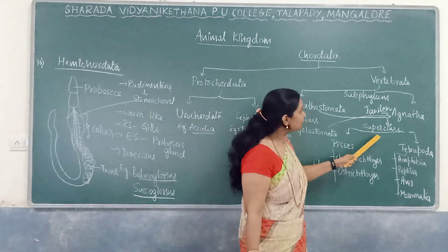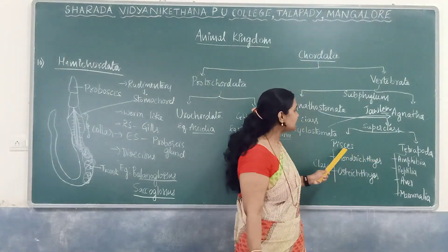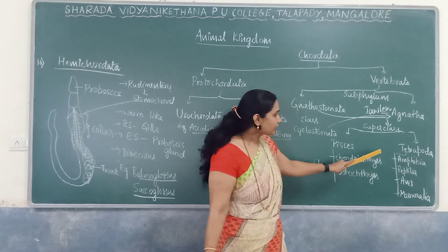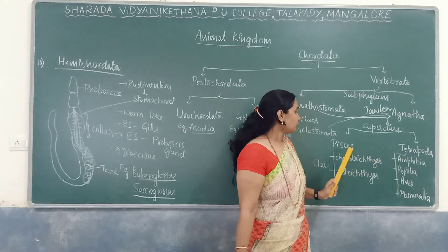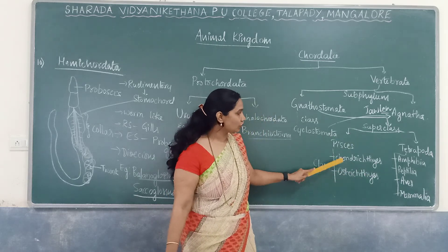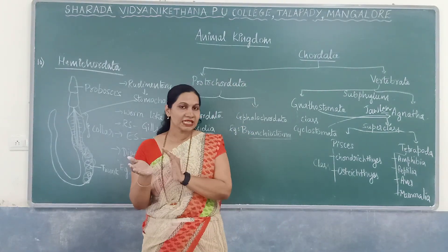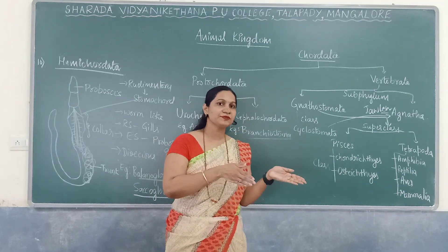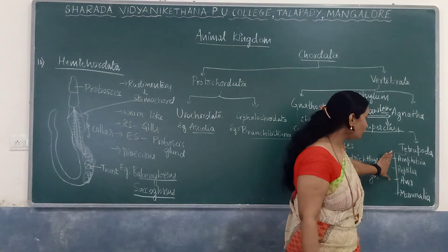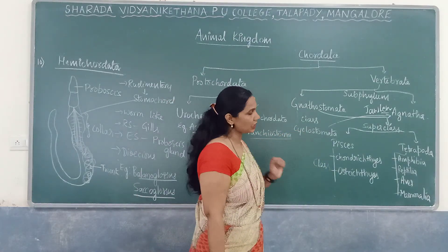Under Pisces there are two classes: Chondrichthyes (cartilaginous fishes) and Osteichthyes (bony fishes). Under Tetrapoda there are four classes: Amphibia, Reptilia, Aves, and Mammalia. The fundamental features of Chordata are: presence of notochord, presence of nerve cord, presence of pharyngeal gill slits, and presence of post-anal tail.